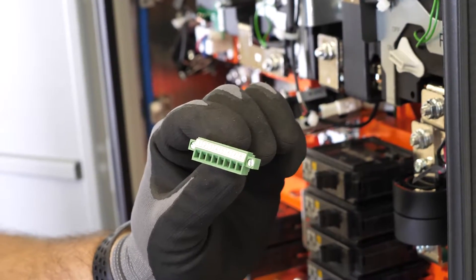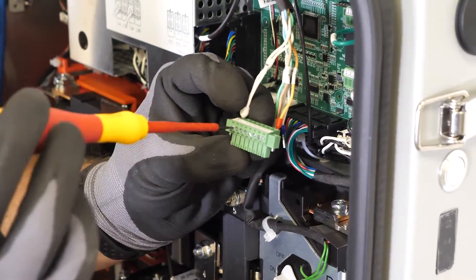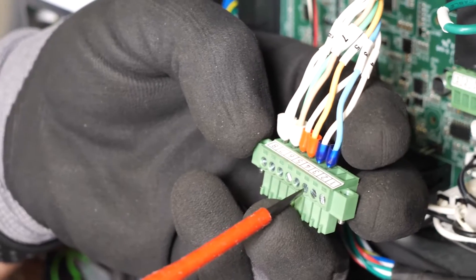With the eight pin connector removed from the inverter, install it to the smart box communication cable using pins three through eight.